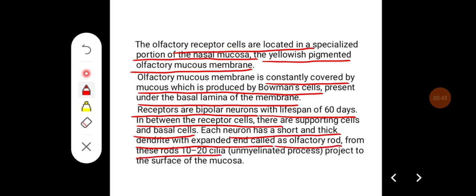From these rods, 10 to 20 cilia, which are unmyelinated processes, project to the surface of mucosa.